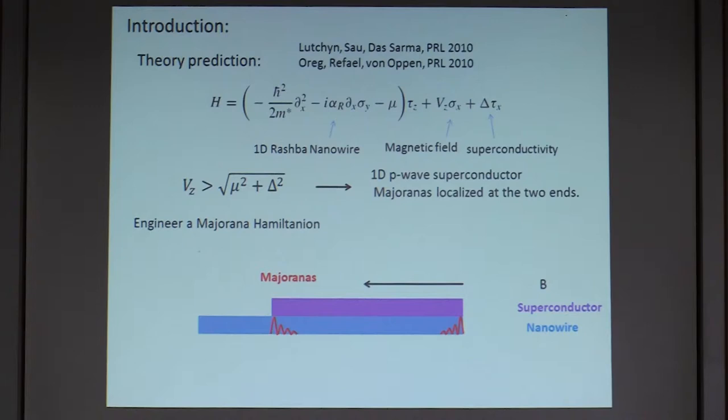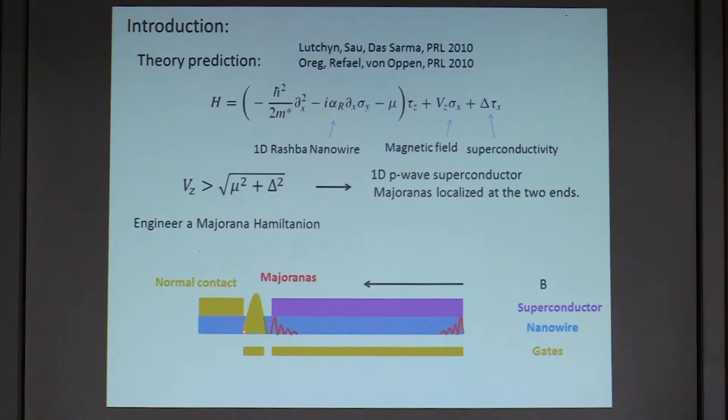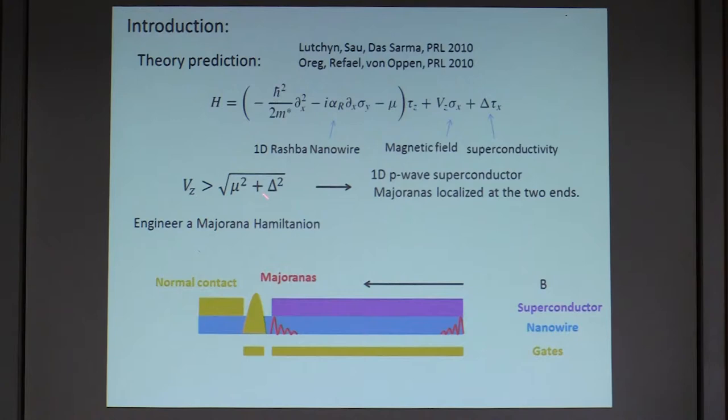To detect these two Majoranas, we need to add gate electrodes and contacts. We have two gates underneath the nanowire and contacts on each side. We use a narrow gate to create a tunnel barrier to deplete the wire, and then measure the conductance from one contact to the other. Because the Majorana is at zero energy, we should measure a signal at zero energy — a zero bias voltage across the two contacts. One gate tunes only the tunnel barrier, and the other gate tunes the chemical potential.